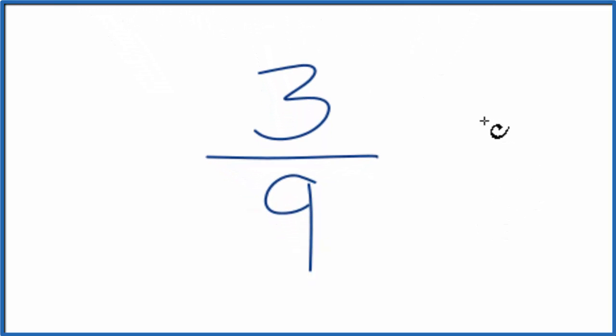To do that, we need to find a factor that's common to 3 and to 9. So 3 would go into 3 once and 9 three times.